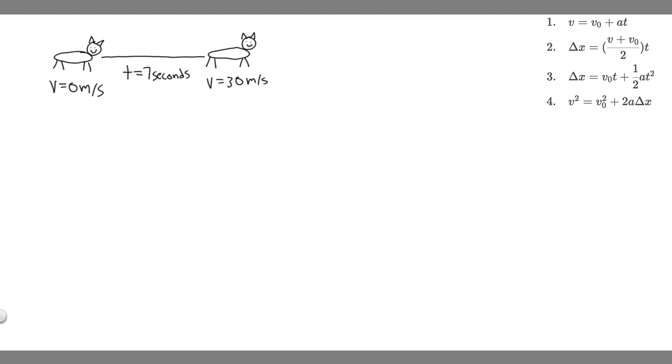The first thing you always want to do when solving these problems is draw what's going on. So we have this cheetah and it's going to be at rest, which means its velocity is going to be equal to zero. Then it's going to travel for 7 seconds and reach a speed of 30 meters per second.